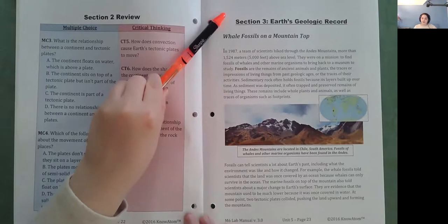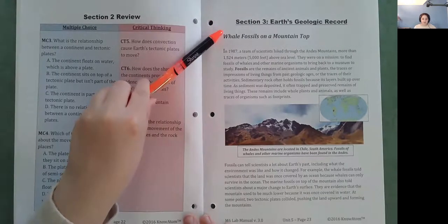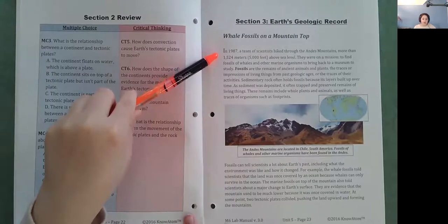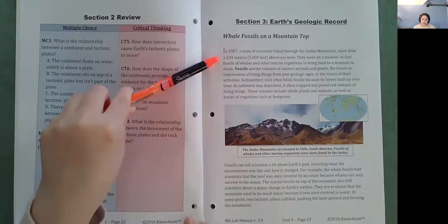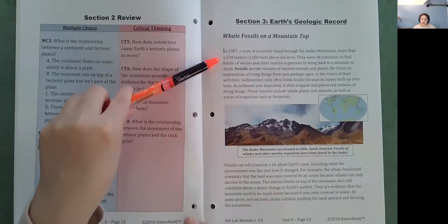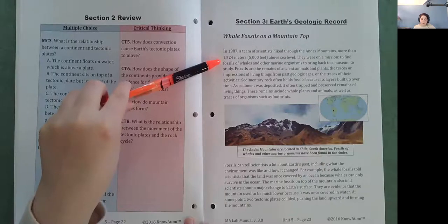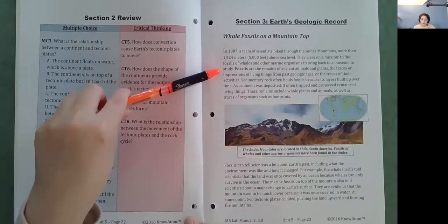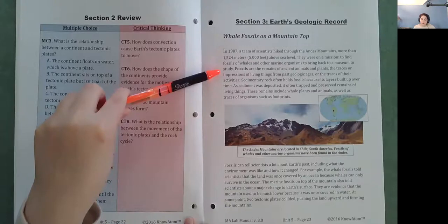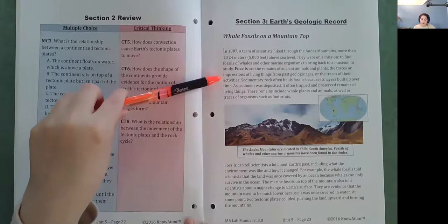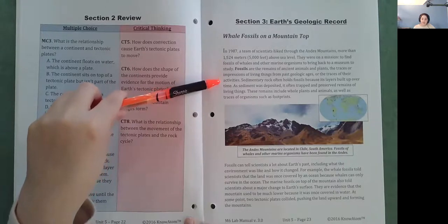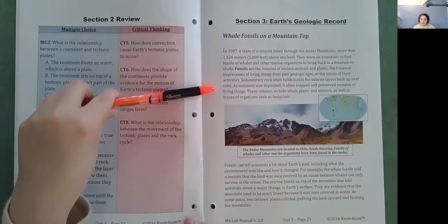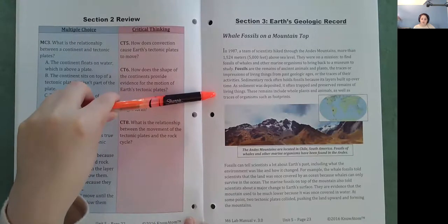Section 3, Earth's Geologic Record. Whale Fossils on a Mountaintop. In 1987, a team of scientists hiked through the Andes Mountains more than 1,524 meters or 5,000 feet above sea level. They were on a mission to find fossils of whales and other marine organisms to bring back to a museum to study. Fossils are the remains of ancient animals and plants, the traces or impressions of living things from past geologic ages, or the traces of their activities. Sedimentary rock often holds fossils because its layers built up over time. As sediment was deposited, it often traps and preserved remains of living things. These remains include whole plants and animals, as well as traces of organisms, such as footprints.